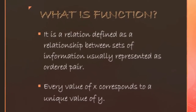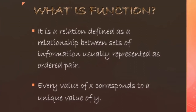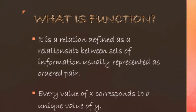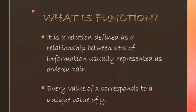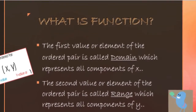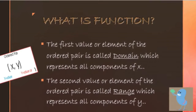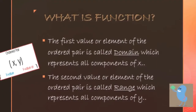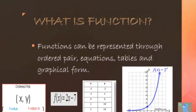So what is a function? It is a relation defined as a relationship between sets of information that is usually represented as an ordered pair. In a function, every value of x corresponds to a unique value of y. The first value or element of an ordered pair is what we call the domain, which represents all the components of x, while the second value or element is called the range, which represents all the components of y.